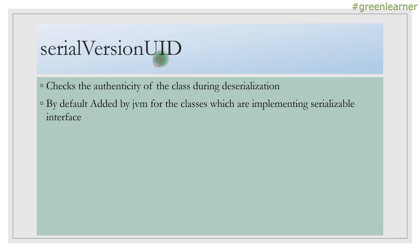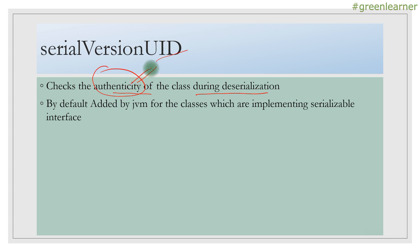So what is Serial Version UID? It checks the authenticity of the class during Deserialization. We have been doing Serialization and Deserialization properly in the previous videos, so it is happening properly. Now, what is this authenticity part?